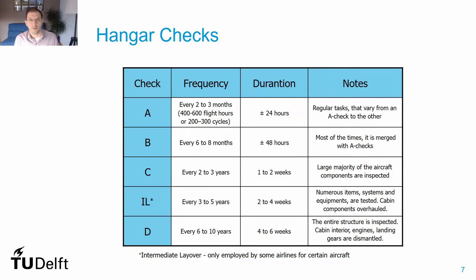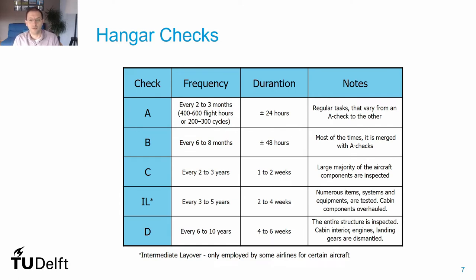Each type of check has different durations depending on how comprehensive the maintenance is. A checks usually take a full day at the hangar, while a C or D check can take a few weeks — weeks during which the aircraft won't be available for operations. It's very important to include maintenance check planning in our airline planning framework, because it means we'll have fewer aircraft available, and if we don't integrate this, we may end up with aircraft unavailable to perform scheduled flights.